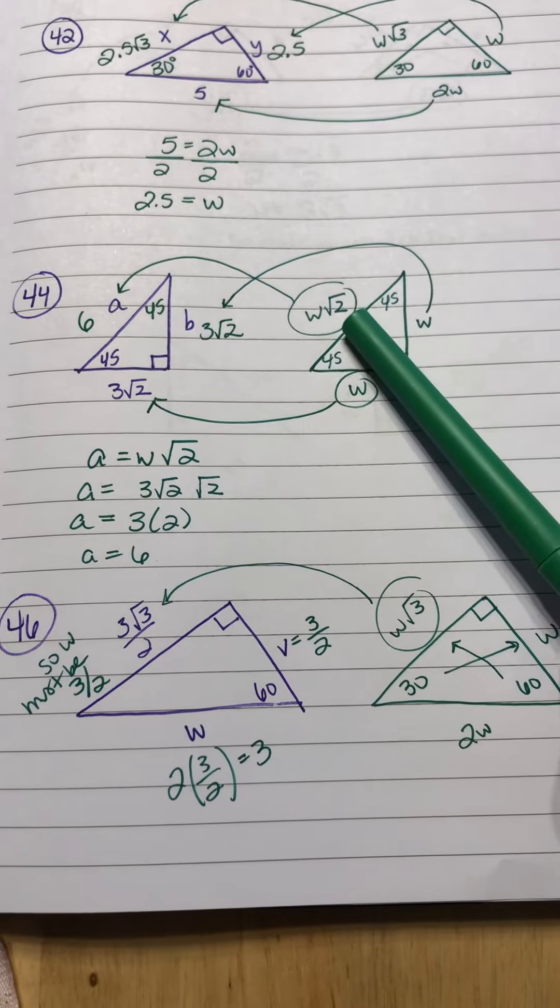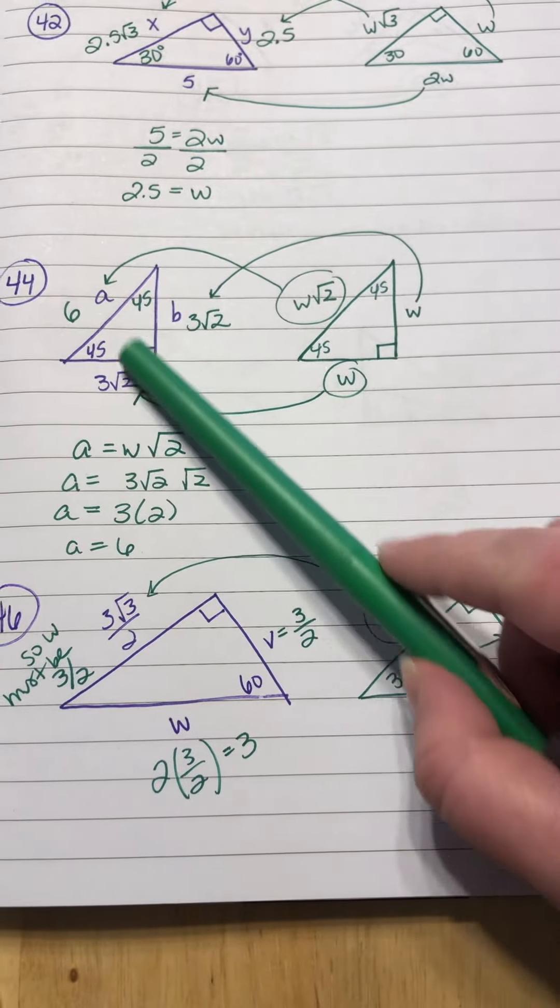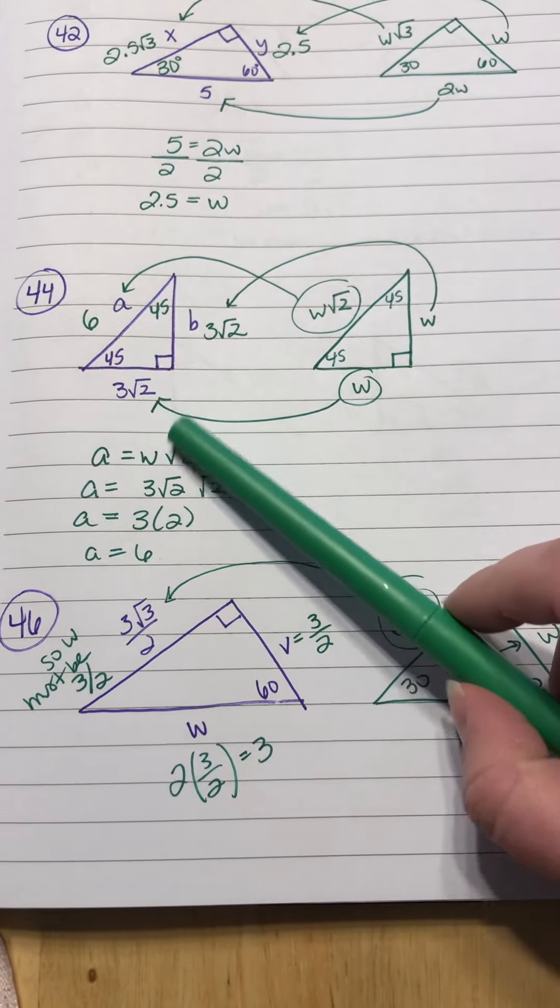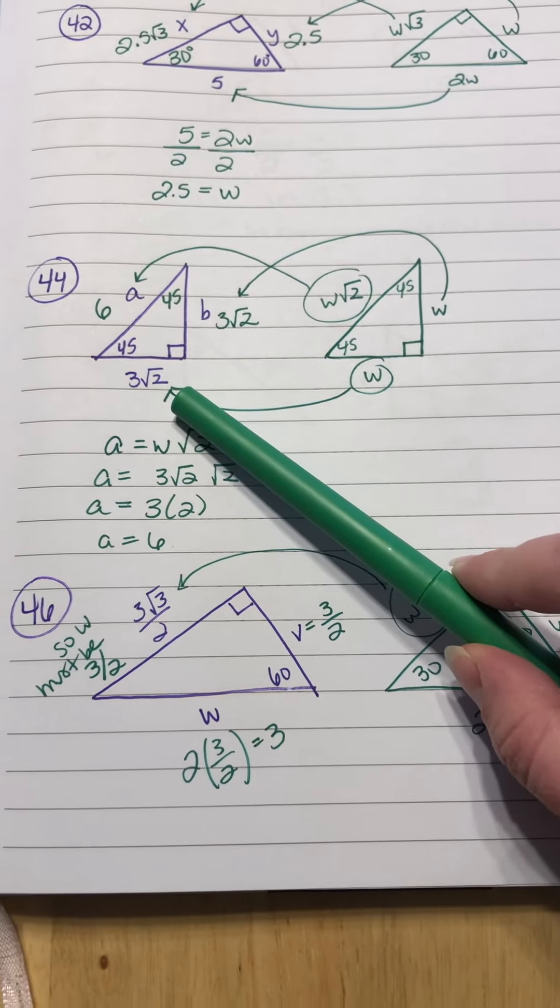Then the hypotenuse is supposed to be W square root of 2. So A is going to be W square root of 2. On our problem, our W already has a square root of 2 with it, but ignore that fact. It's just trying to trick you.